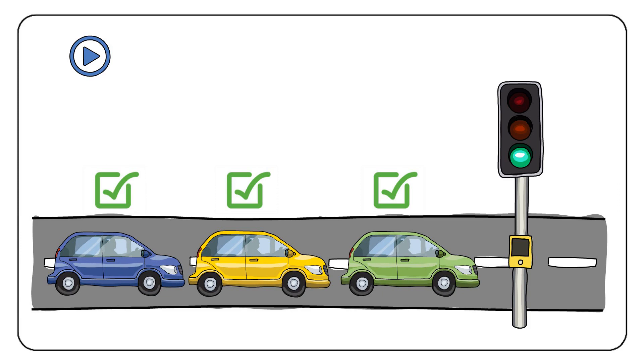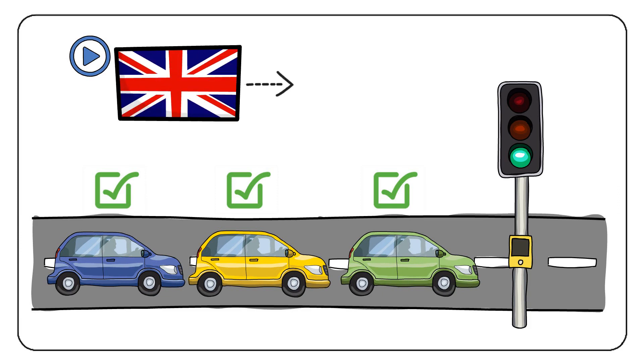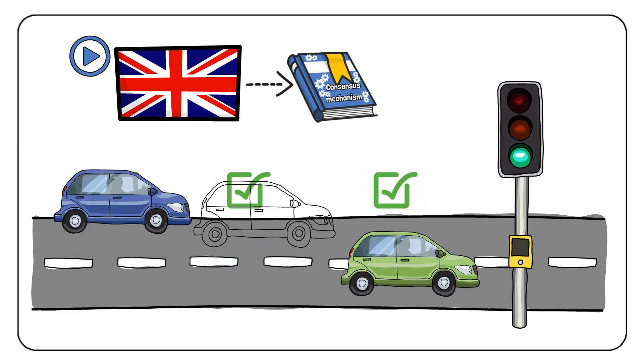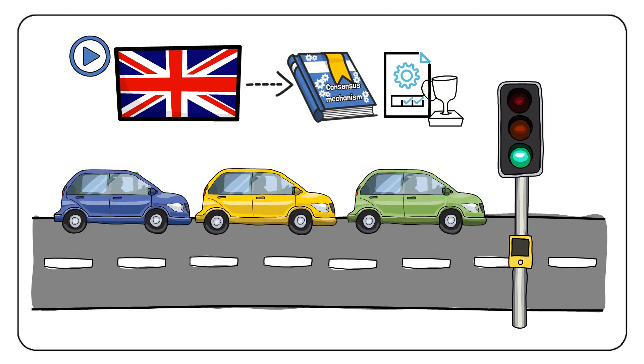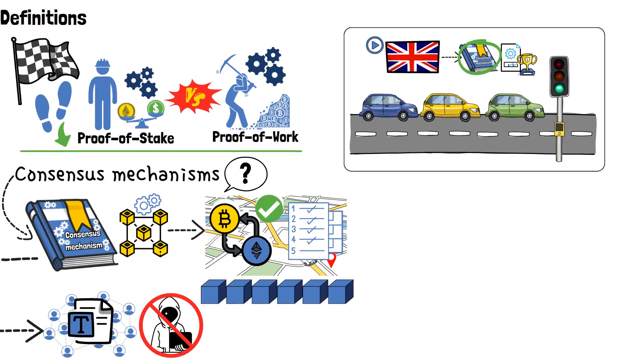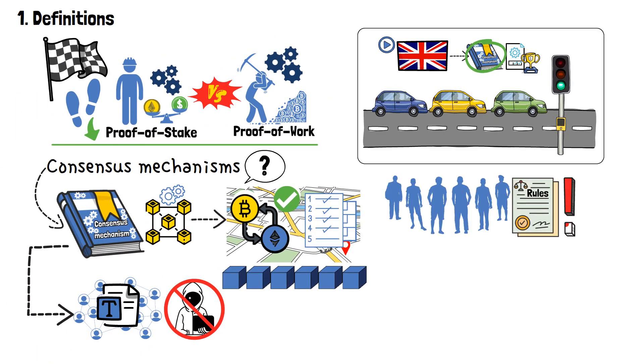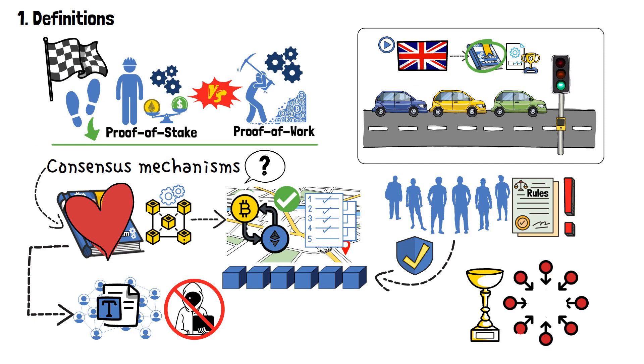Every driver agrees upon the rules and knows what to expect when driving down the road. To continue with this comparison, you could say that the UK, for example, runs on a different consensus mechanism when it comes to the traffic. The British all drive on the left, yet an organized system still prevails. That's all thanks to the consensus mechanism. Adhering to a shared set of rules is important because it keeps the blockchain's integrity and makes it secure. All of this is achieved without the need for a central authority, all thanks to a consensus mechanism.